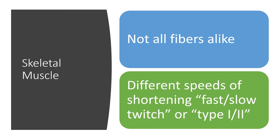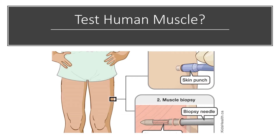Let's talk about how we actually test muscle. This is done with a muscle biopsy, which involves removing a very small piece of the muscle tissue from the muscle belly for analysis. The area is usually numbed with a local anesthetic, and then a small incision is made with a scalpel through the skin. A hollow needle is then inserted, and a plunger is pushed through the center of the needle, which allows you to snip off a very small sample of that muscle.